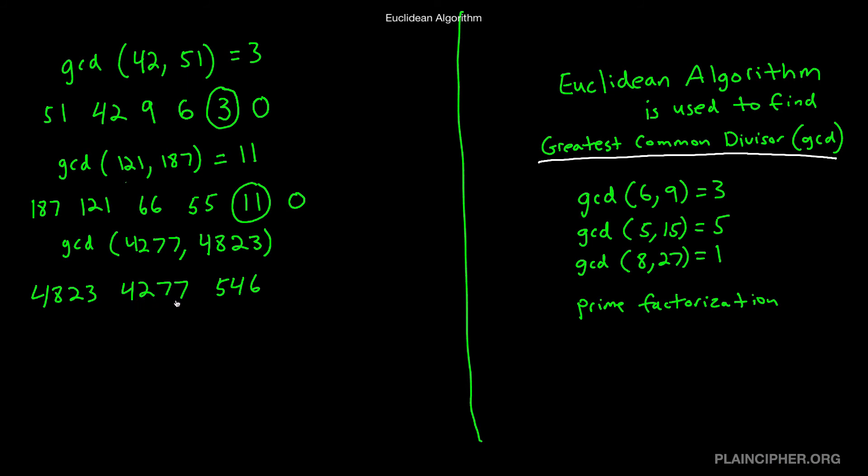What's 4,277 mod 546? It's 455. What's 546 mod 455? It's 91. And what's 455 mod 91? It's 0. So our answer is 91.